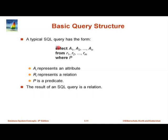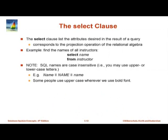Now we come to the basic query structure in SQL. In SQL every query has the form: SELECT list of attributes (or expressions) FROM a list of relations WHERE some predicate is true. This is the basic form and the result of this is itself a relation. Let us look at this overall structure starting with the SELECT clause. Here is an example query: SELECT name FROM instructor. We have an instructor table and we are selecting — this is equivalent to relational algebra projection of the name from the instructor table.